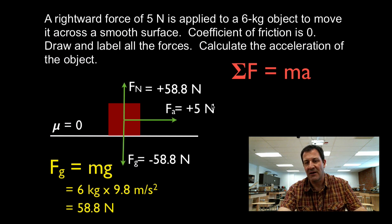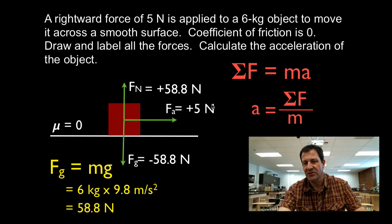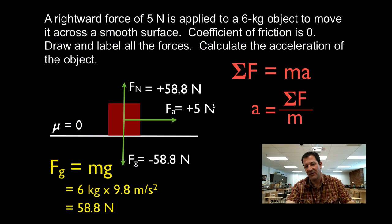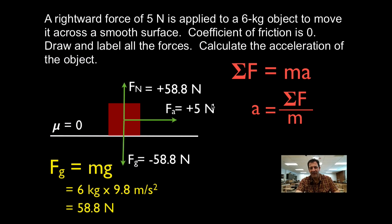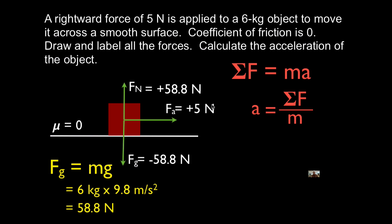Now we have all the forces and we can use Newton's second law. We rearrange it so that acceleration equals the sum of the forces over the mass. The object is not moving up or down — it's only accelerating in the horizontal direction, the x-axis. So we're not going to sum the normal force and the gravitational force; we're only concerned with motion in the x-direction, and the only force acting in the x-direction is the applied force.